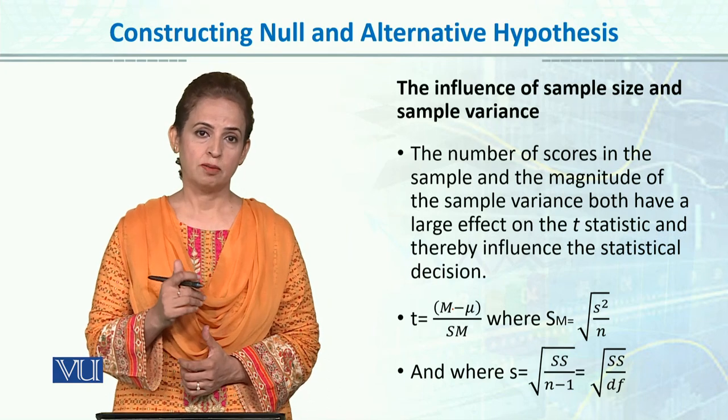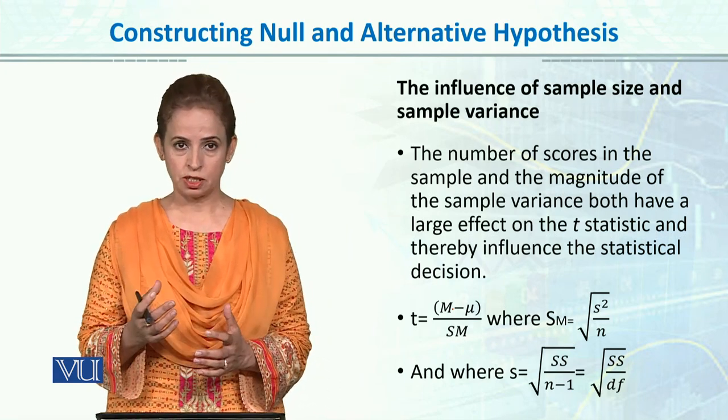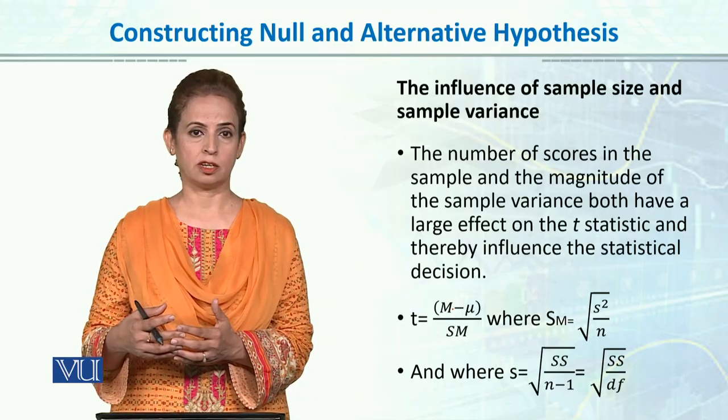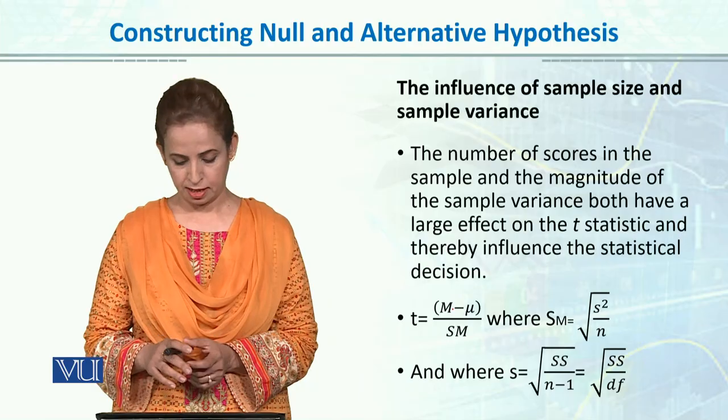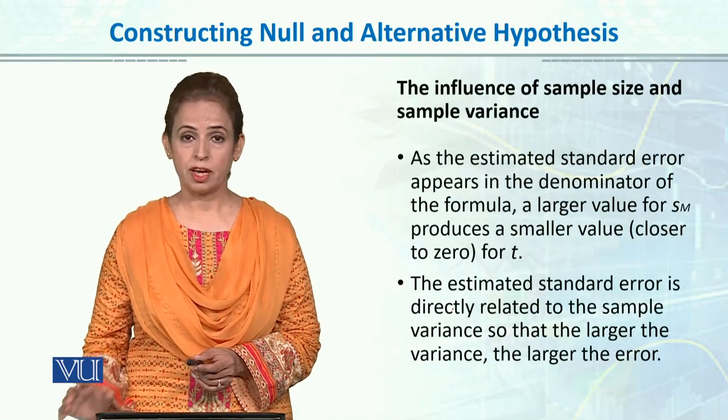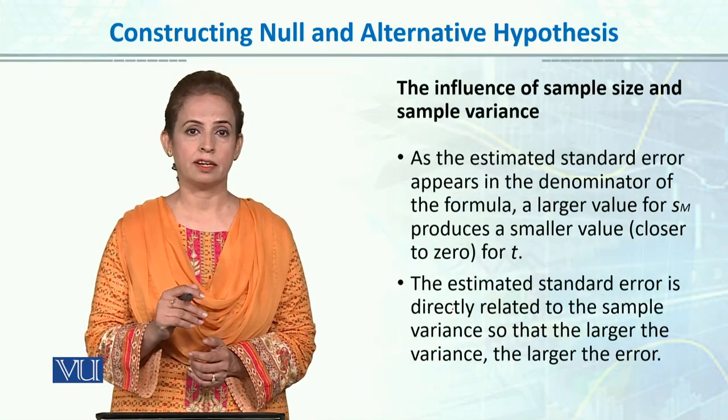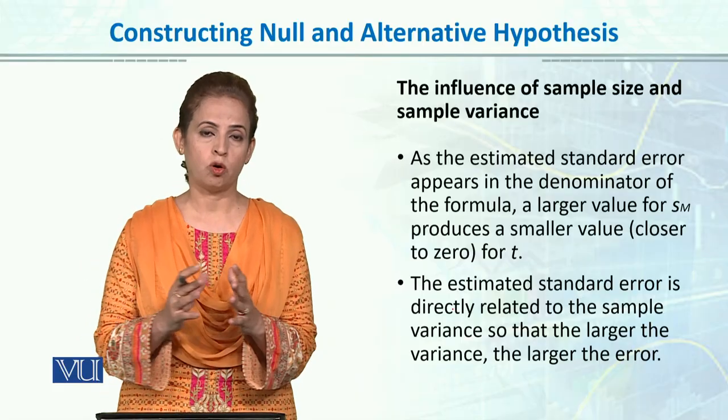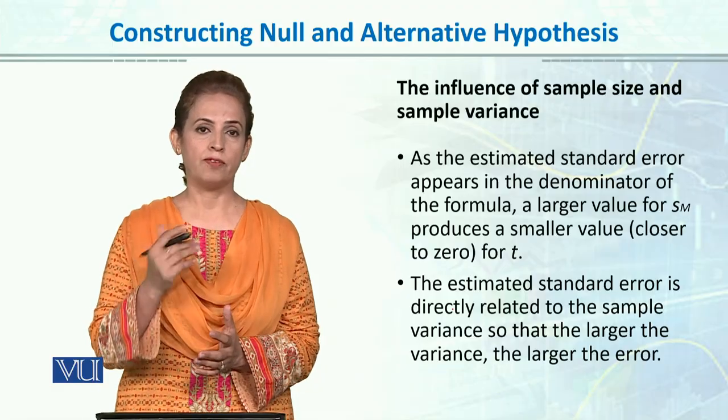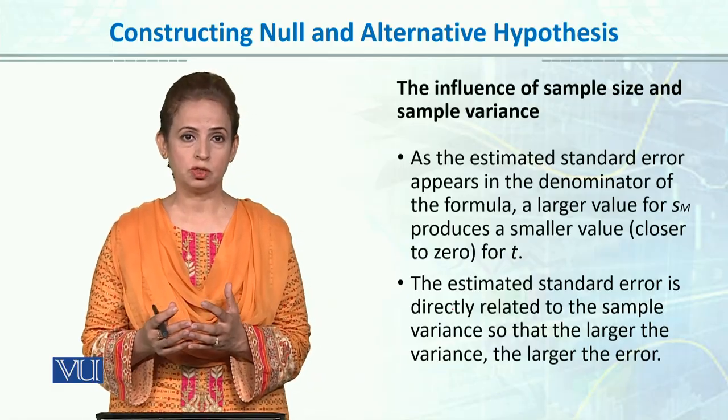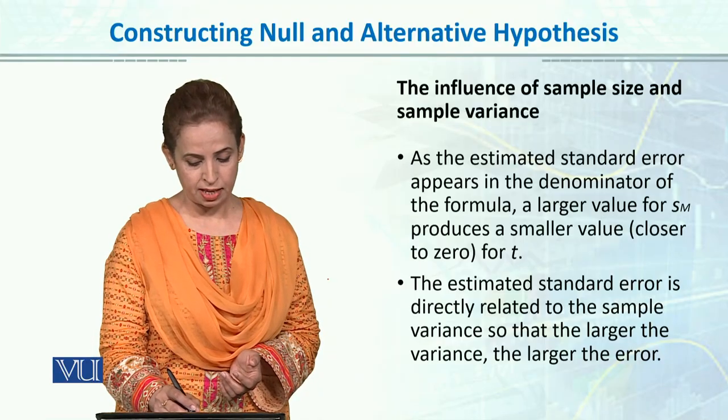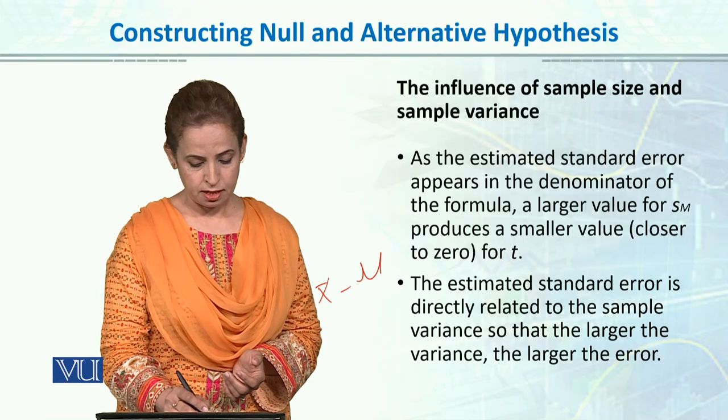So, naa siraf sample size, balke sample standard deviation, ya sample variance, ya variability ka bhi T-statistic ko influence karta hai, effect karta hai. Agar humara sample variance ro hai, yani sample ki standard deviation, yani variability in the data, if it is increasing, or it is large, or the value of standard deviation is large, toh kya hooga, chunke aapko pata hai, ki variance humara denominator mein aata hai, T ke anndar.